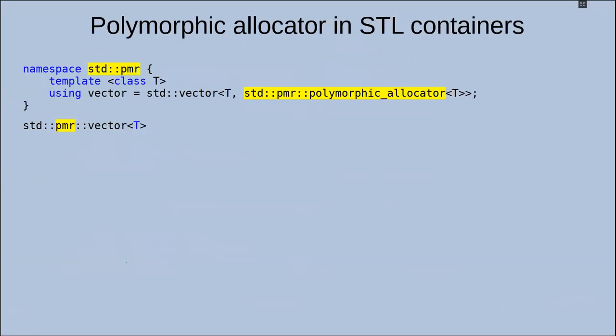How to use in our containers? In C++17 was added aliases for containers. For example, instead of std::vector with polymorphic allocator T, we can use just alias std::pmr::vector.